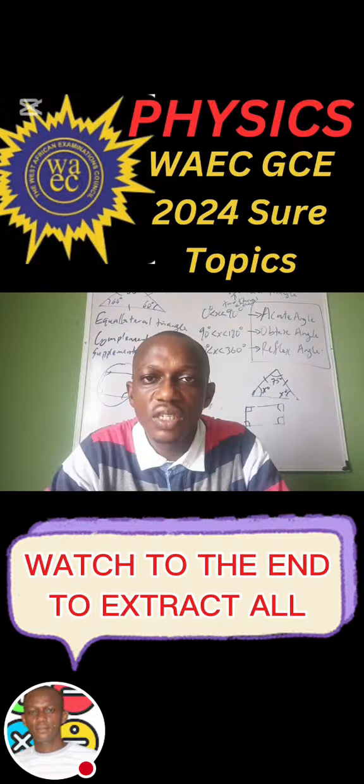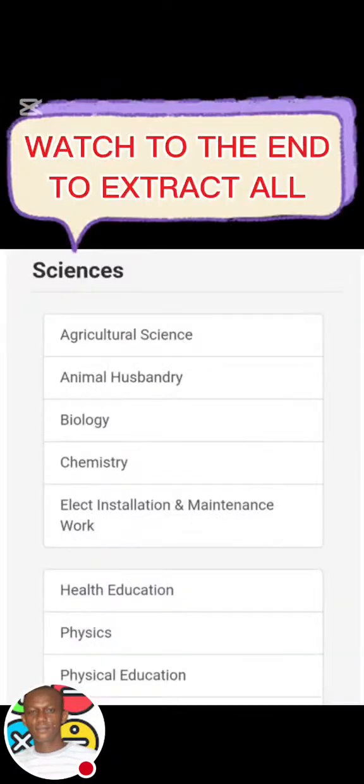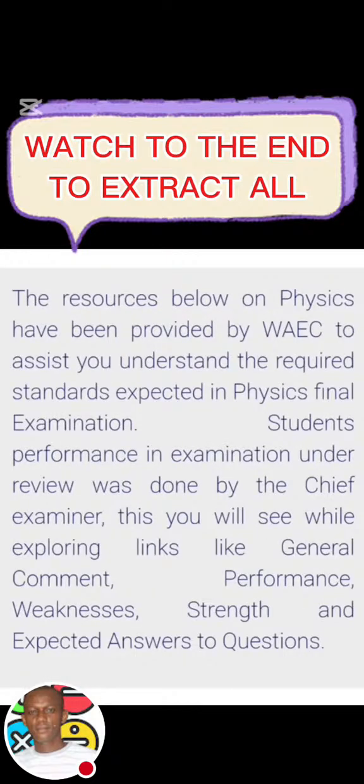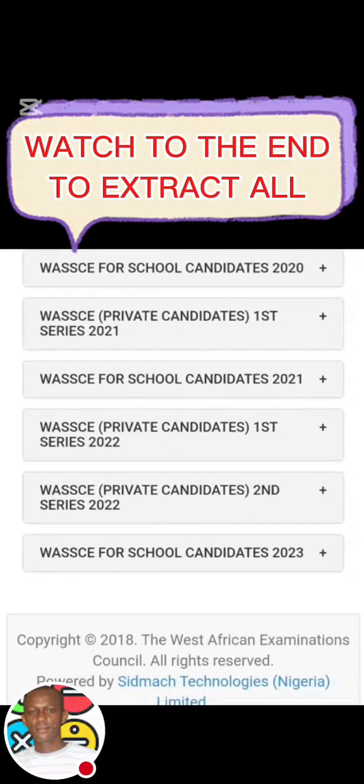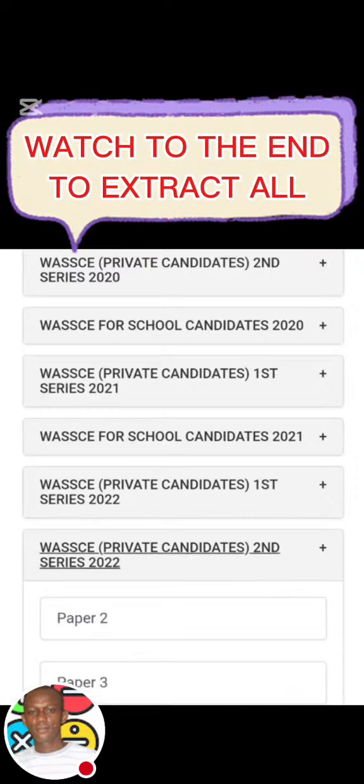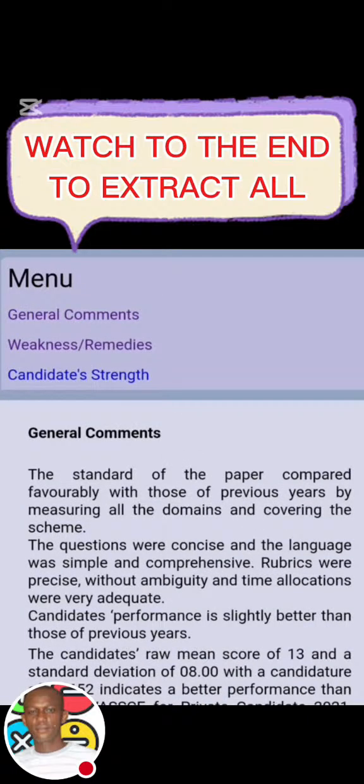Let's get to WAEC's site and see the method I always use. I'm already on the WAEC site. Since I want to speak about physics, let's go to physics. I'll go down to the most recent years, so we'll be checking the most recent three years, 2022 and 2023. We will check only the private candidates because we are doing our research on GCE. We'll go to the theory, and from there I'll go to weaknesses and remedy. Let's see what the chief examiner will have to say.